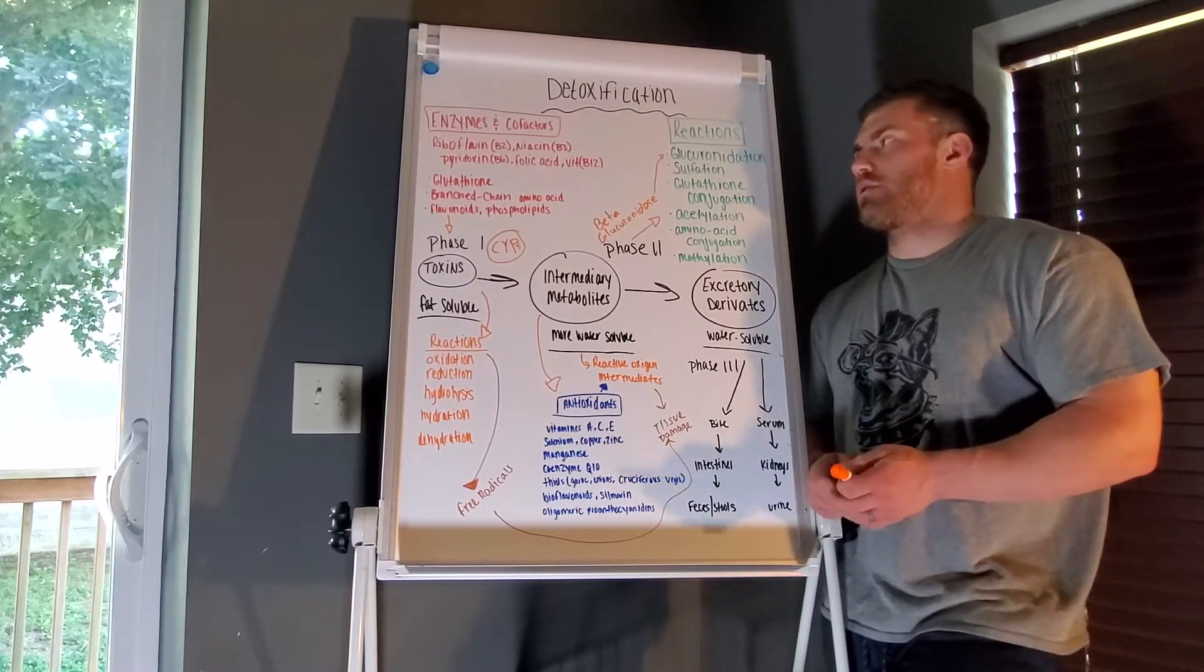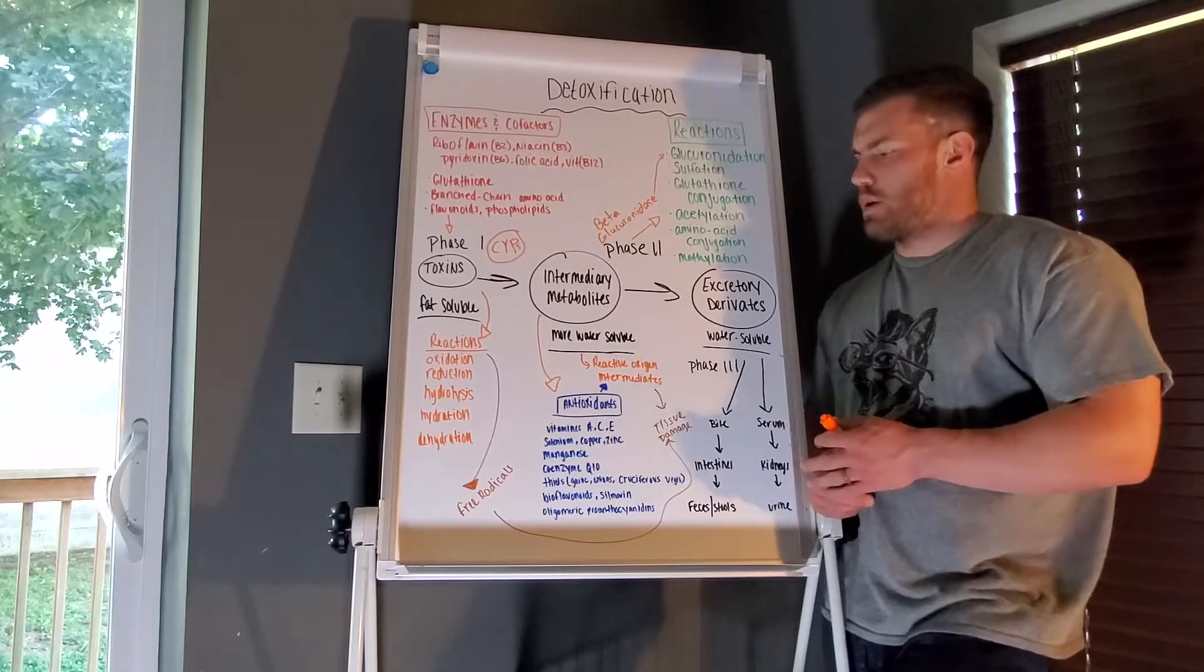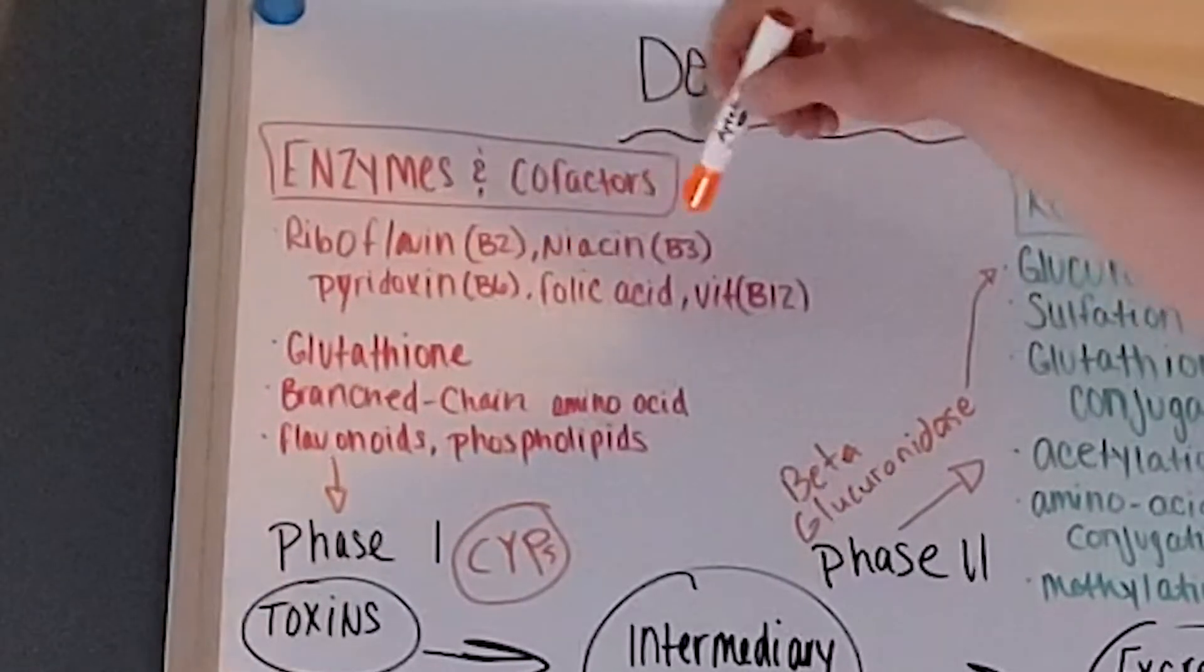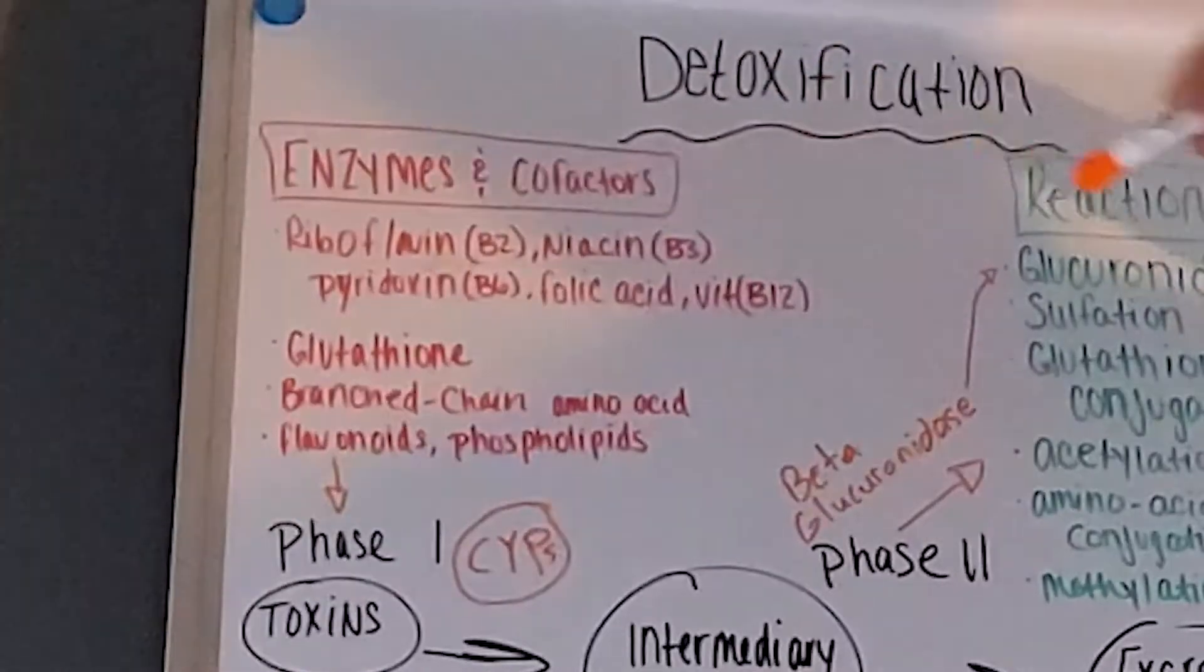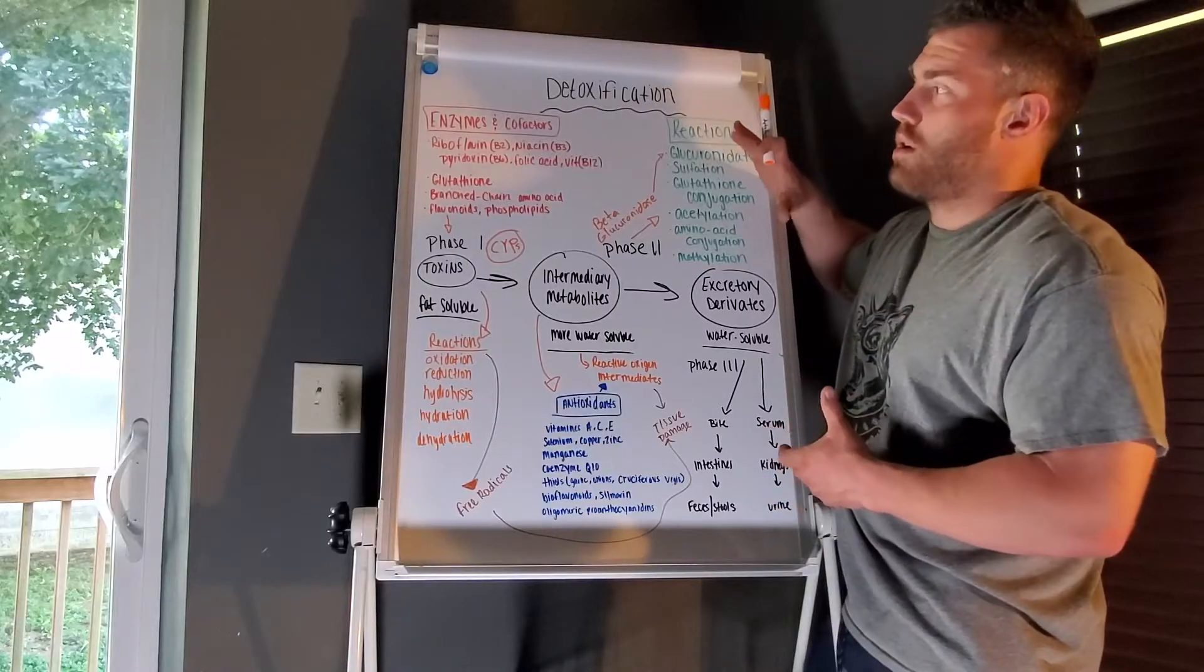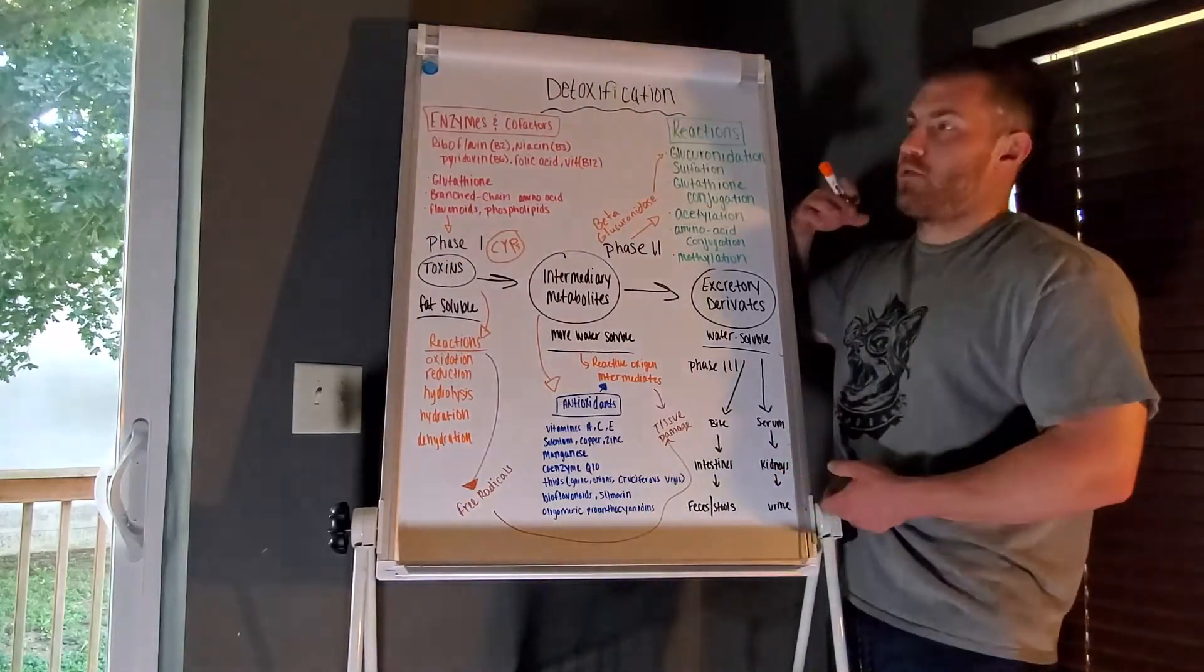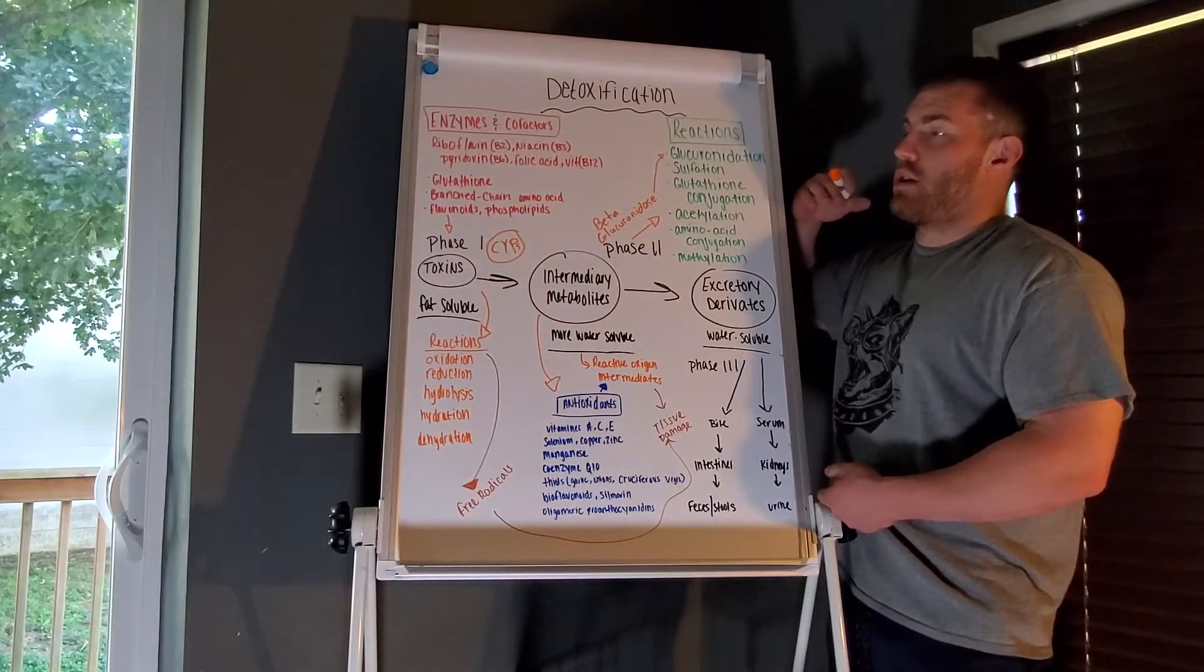We also have enzymes and cofactors that are required for these steps. Here we have some enzymes and cofactors: B2, B3, B6, folic acid, B12, which we know, especially these B vitamins in specific forms, are required for methylation and overall detoxification.